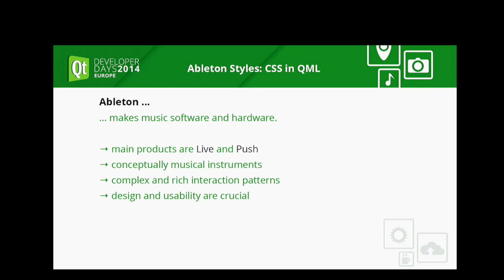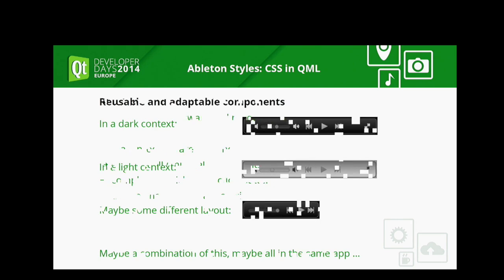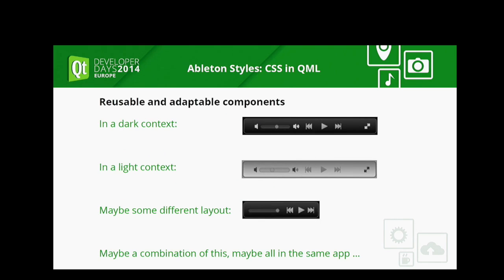So now we are investigating Qt and QML, and we have to design around these detail things. One topic is reusable and adaptable components — we have three examples here. We have a base control, which is a volume meter. If it appears in a dark context, it should look like the first one. In a light context, it looks like the middle one — you have to change the styling. And in the third one, it even changes its layout: there's not so much space, so you have to leave out icons. So you have to find a way to style your base controls.